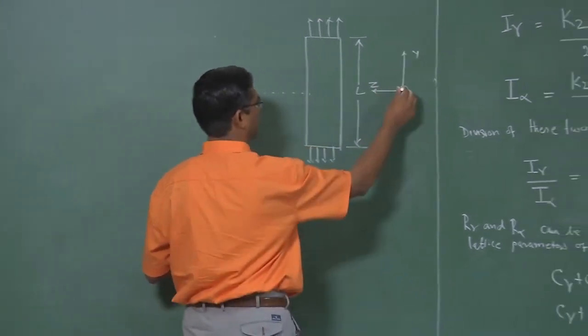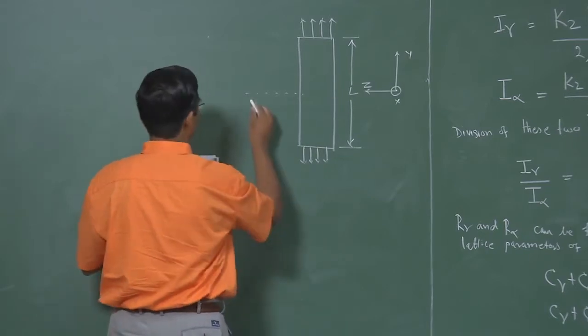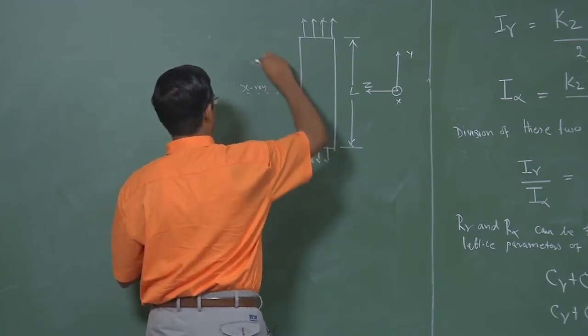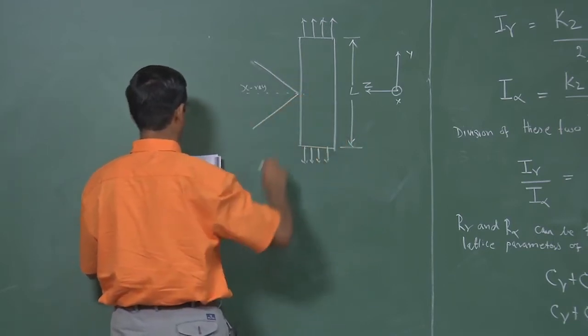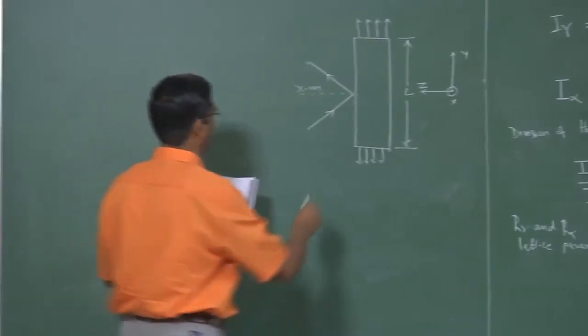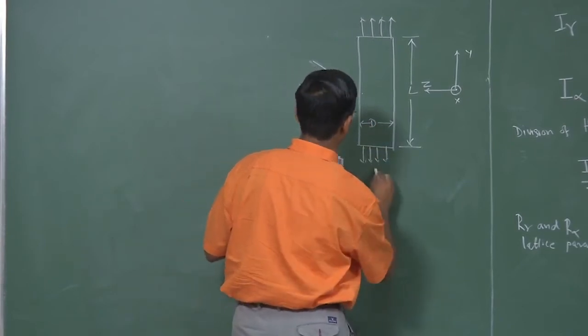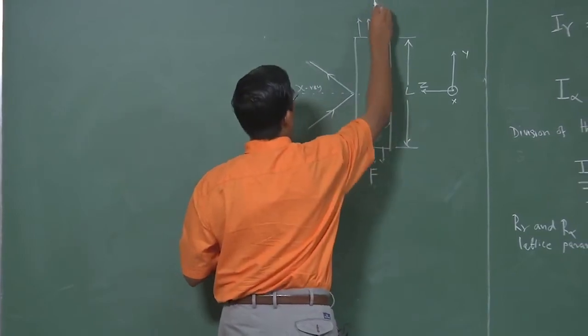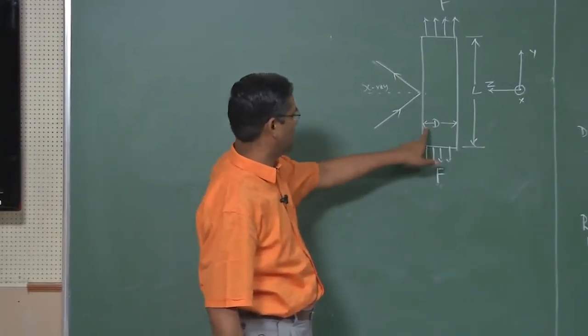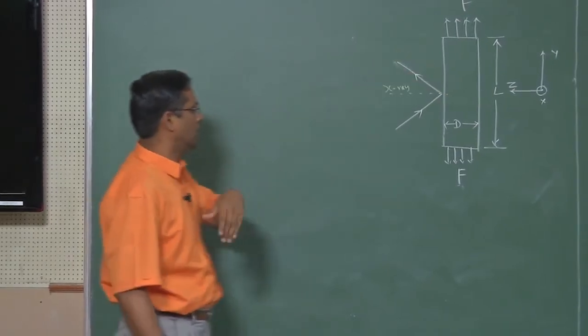This is the coordinate: x is perpendicular to the blackboard, this is Z and this is Y. Suppose you assume that this is an x-ray which comes. Assume that this is a cylindrical sample which is being pulled in the uniaxial direction with dimensions D and L. The x-ray comes and impinges on the surface of the sample and then it gets diffracted.